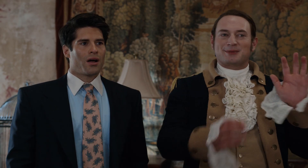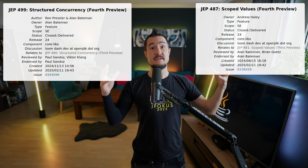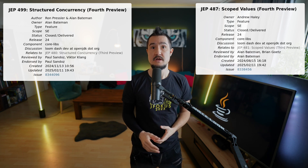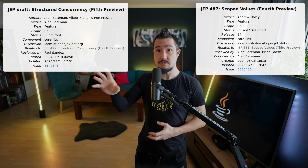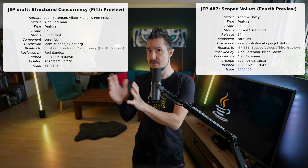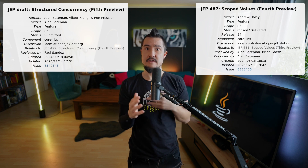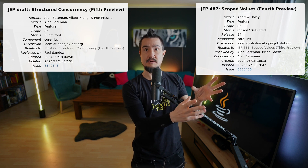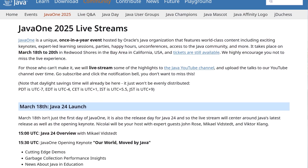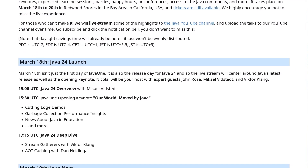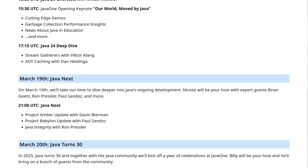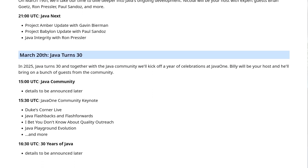Oh, great gasp, everyone. Bravo. The structured concurrency and scope values APIs are both in their fourth preview in JDK 24. Structured concurrency will probably see a slight revamp and another preview in JDK 25, but scope values seem to be stable and may finalize. We find out more about that once Java 24 gets released in two and a half weeks at JavaOne — something we'll livestream on this channel. Link to more details in the description.